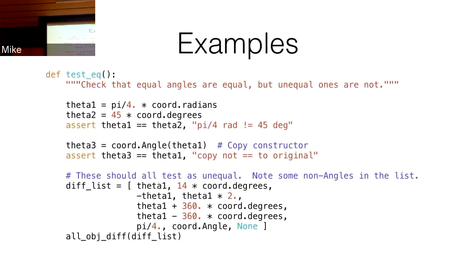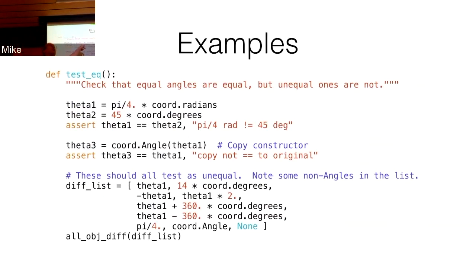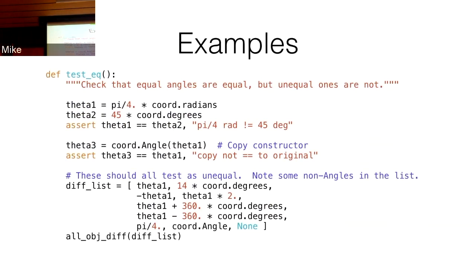Another useful utility is test_equal — testing the EQ function. You test things that are supposed to be equal: for instance, pi/4 radians and 45 degrees are the same thing, you can check they're equal. If you make a copy, it should be equal. Then there's the more interesting part: test things that are supposed to be unequal — some aren't even actual angles, just a number or None. It'll go through and check every possible pair and make sure they are actually not equal, and also that they hash to different values. It sanity-checks that things supposed to be different behave like different objects.